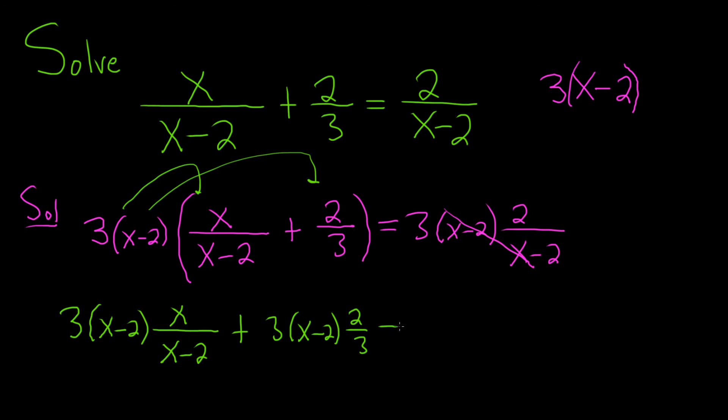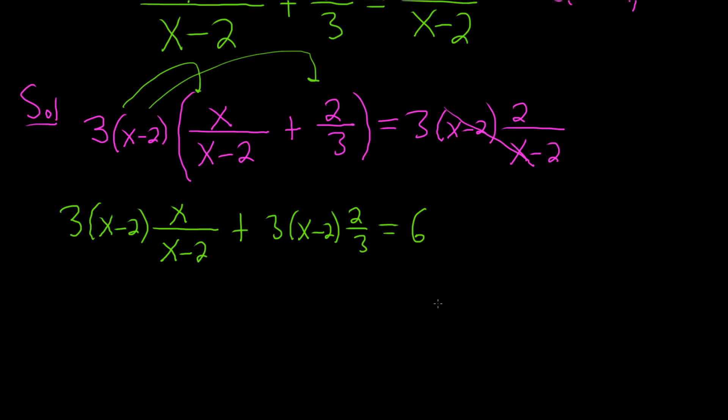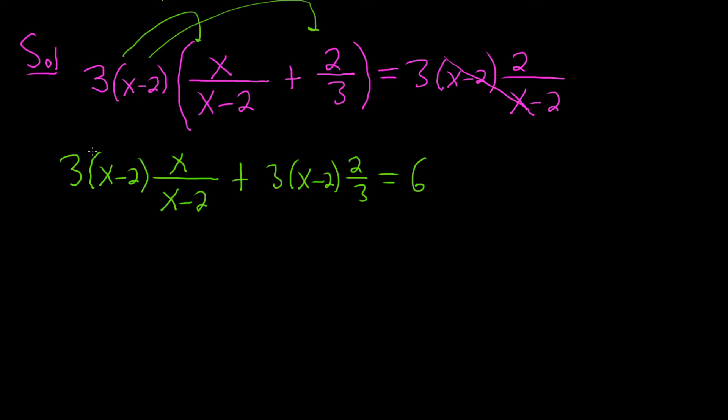On the right-hand side, we're left with 3 times 2, which is equal to 6. So now we have some cancellation. Here we lose the x minus 2's. So we're left with 3 times x. And here we lose the 3's.